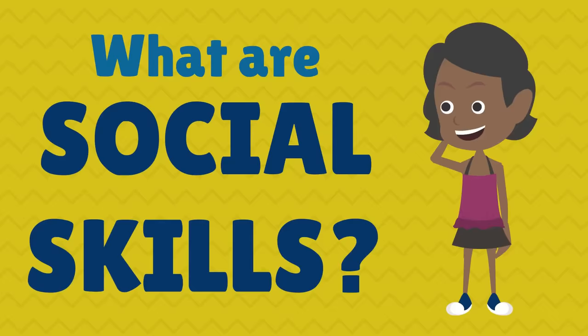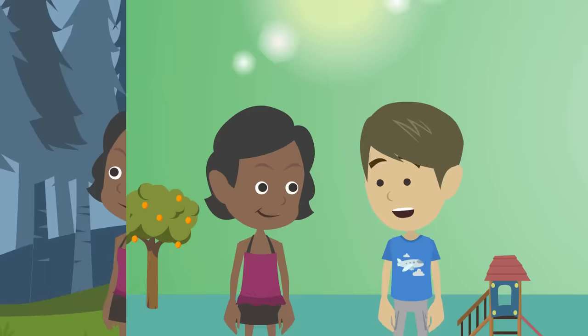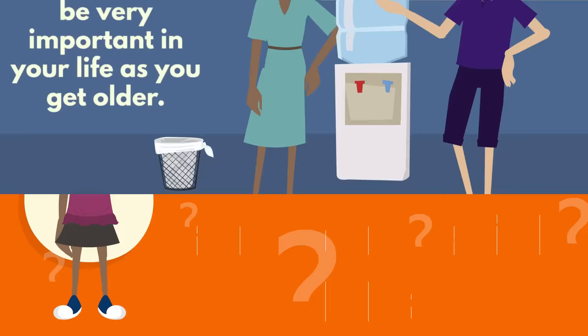So what exactly are social skills? Social skills are the ways in which you behave, talk, and play when you're around other people. It's how good of a job you do having conversations, understanding people's feelings, and behaving when you're in certain places. Social skills are important because they help you know what to do or say to get along better with the kids and adults that you interact with every day.